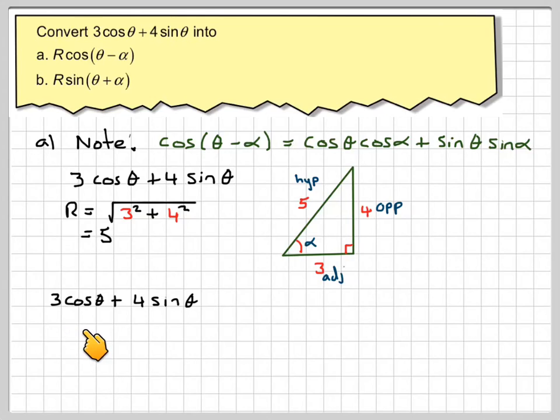So 3 cos theta plus 4 sine theta will equal 5 times 3 over 5 cos theta, which is cos alpha cos theta, plus 4 over 5 sine theta, which is sine alpha sine theta.